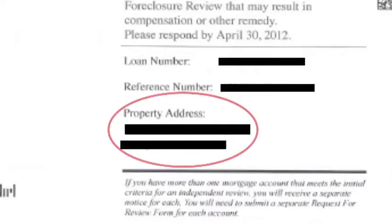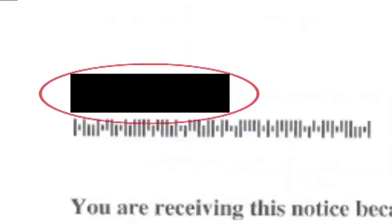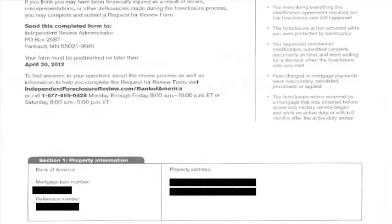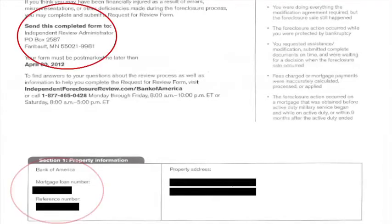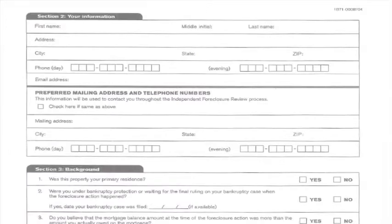This shows your eligible property and mortgage information, your current name and contact information, servicer information, where you should mail your application, more property and mortgage information, and then you will reach the actual application listed as Section 2, your information.